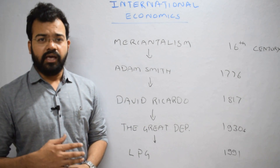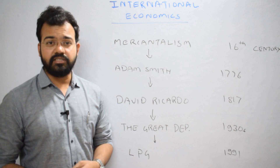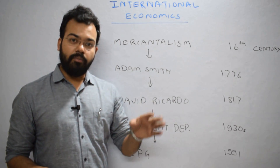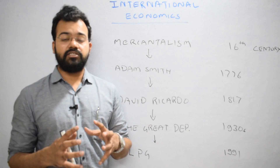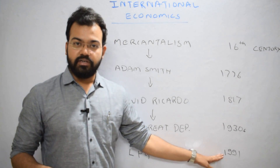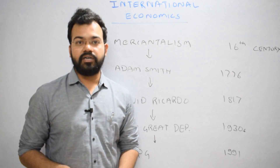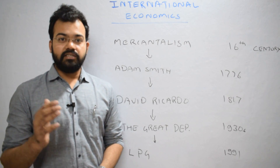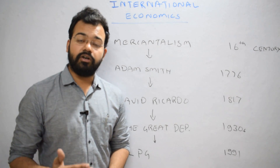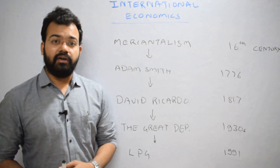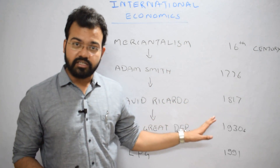From 1947 to 1991, trade started globalizing. In 1991, open economic policies like liberalization, privatization, and globalization occurred in most developing countries. From 1991 to 2018, we experienced vast amounts of globalization and interdependence among countries, with free movement of goods, services, and factors of production. However, in 2018, we are once again experiencing trade wars and restrictions on immigration — a key issue when dealing with international economics.